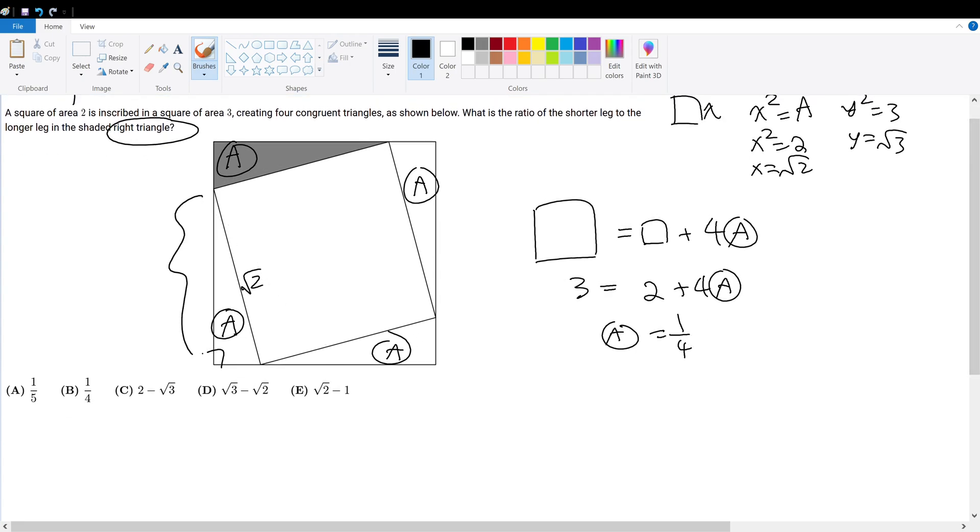Well, how do we find this side length? I don't know what that is, but I do know what this is. That's root 3. So let's call this A. If that's A, that's root 3 minus A, correct? That means they're all congruent. They all have the same base and height. Because the area of a right triangle is base times height divided by 2. Therefore, by this reasoning, this side must be root 3 minus A.